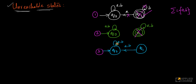In yet another case, if your input is a or b, you stay in q0. There are no final states here either. If you think about it, you will never go out of q0, so q1 is also an unreachable state.